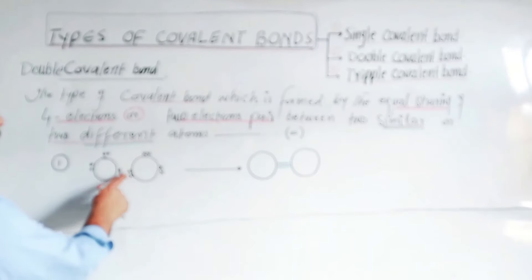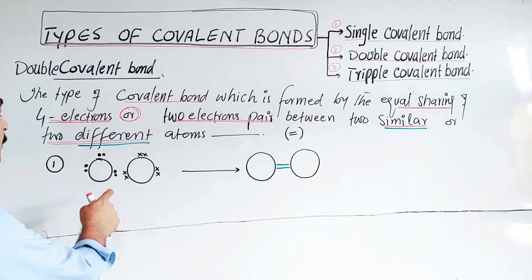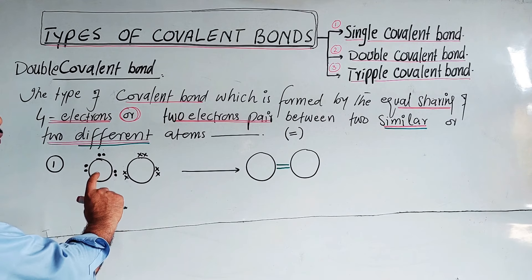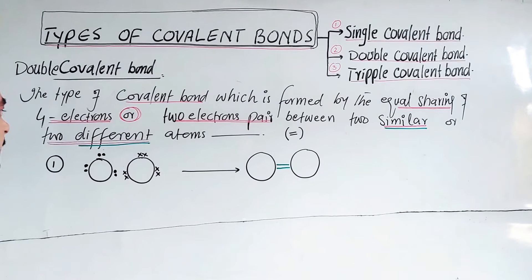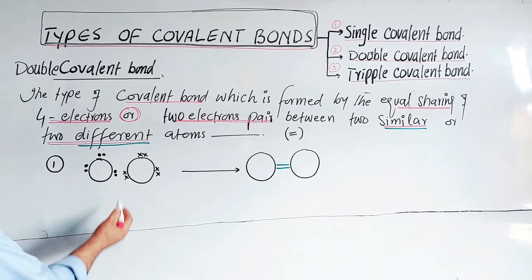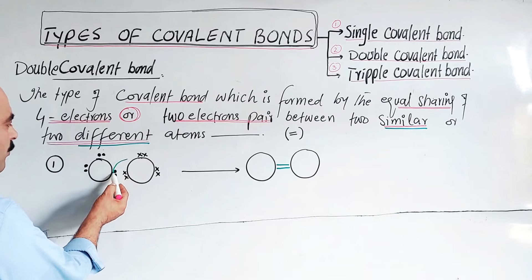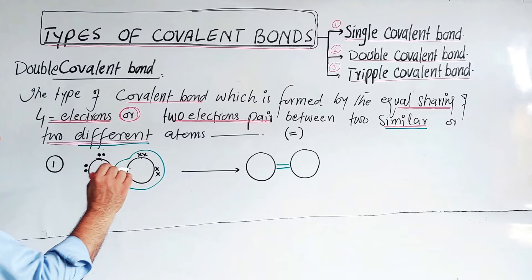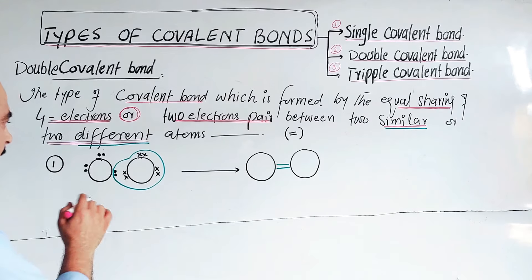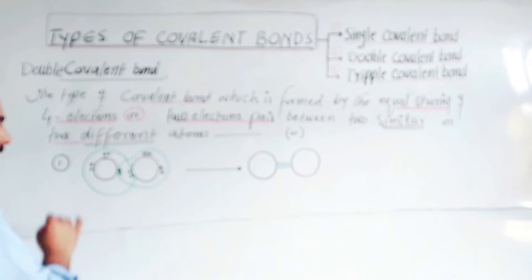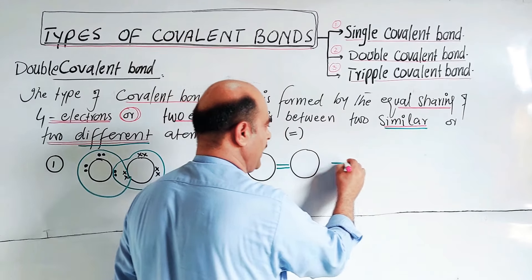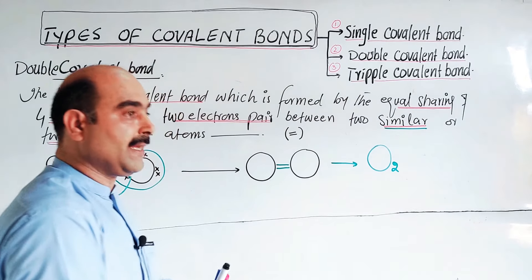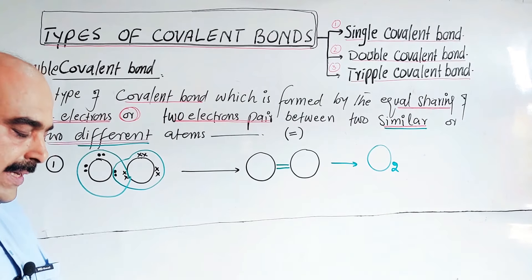Counting the shared electrons with both atoms: the left oxygen counts them and gets 8 (octet complete), and the right oxygen counts them and also gets 8. In this way the oxygen atoms convert to the O2 molecule, which is more stable than separated oxygen atoms, and energy is released when the bond forms.